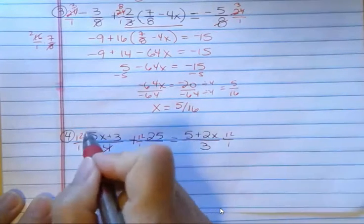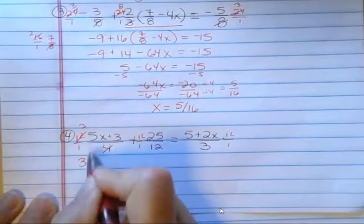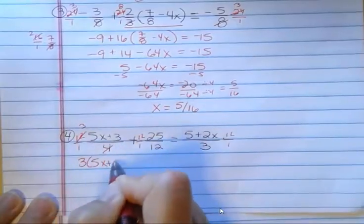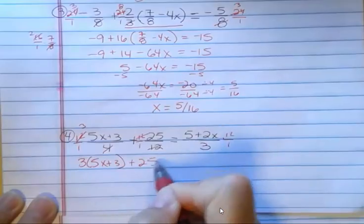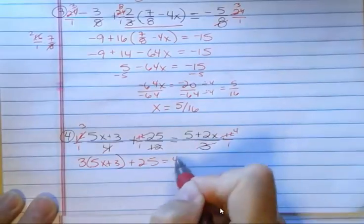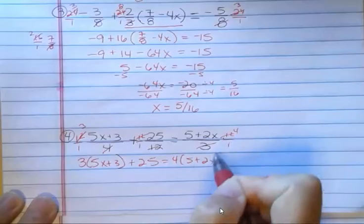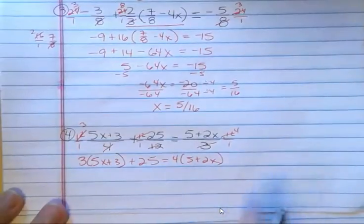4 goes into 12 three times. So I have 3 times 5x plus 3. The 12s go away. And then 3 goes into 12 four times. So I have 4 times 5 plus 2x. And now you just have to solve that equation.